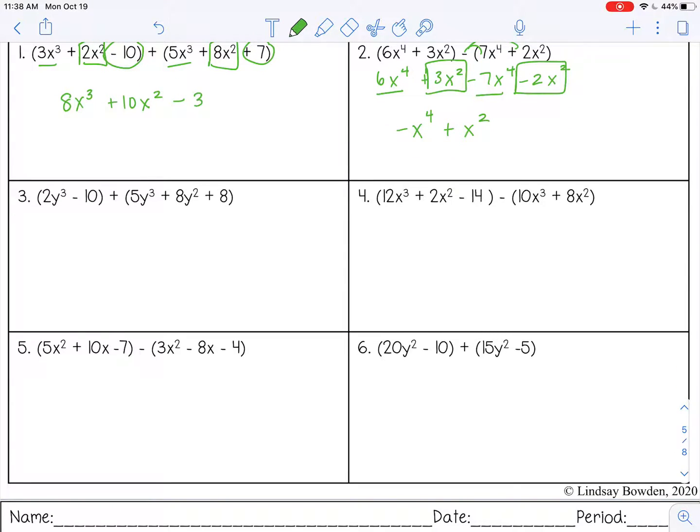Number 3. I'm adding here, so let's find our like terms. 2y cubed and 5y cubed. Those are like terms. They both have y cubed. 2 plus 5 is 7y cubed.